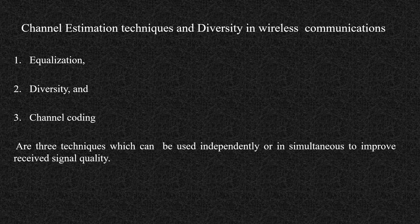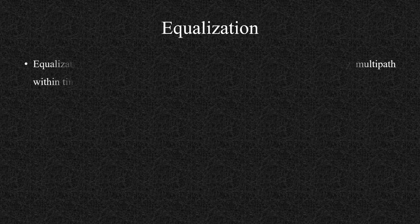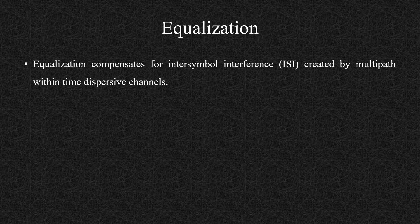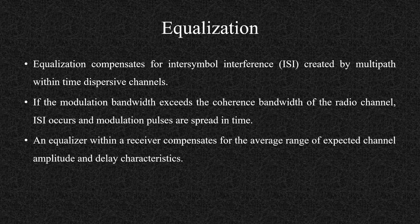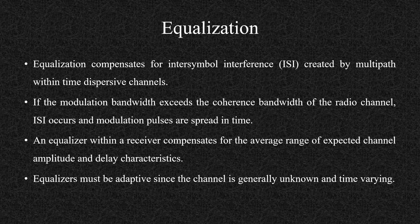So these techniques are just to improve whatever you are getting in a better way. First we will talk about the equalization. Equalization compensates the inter-symbol interference created by multipath within time dispersive channels. If the modulation bandwidth exceeds the coherent bandwidth of the radio channel, ISI occurs and modulation pulses are spread in time. An equalizer within a receiver compensates for the average range of the expected channel amplitude and delay characteristics. Equalizers must be adaptive since the channel is generally unknown and time varying.